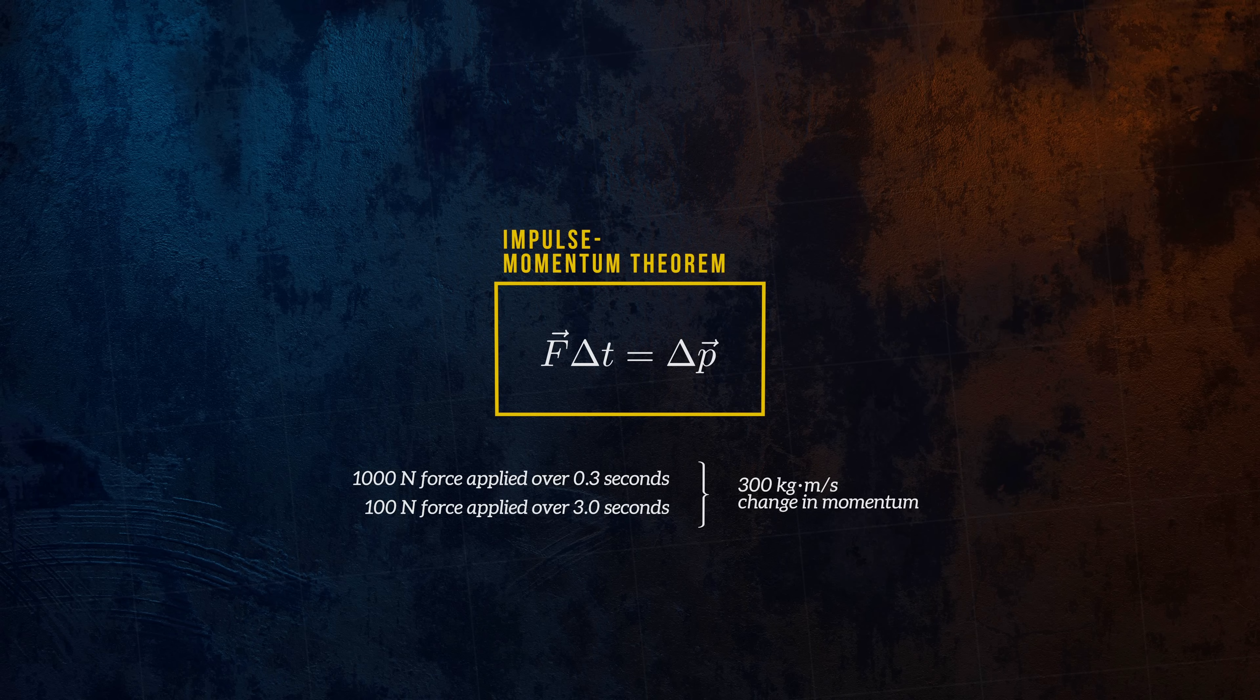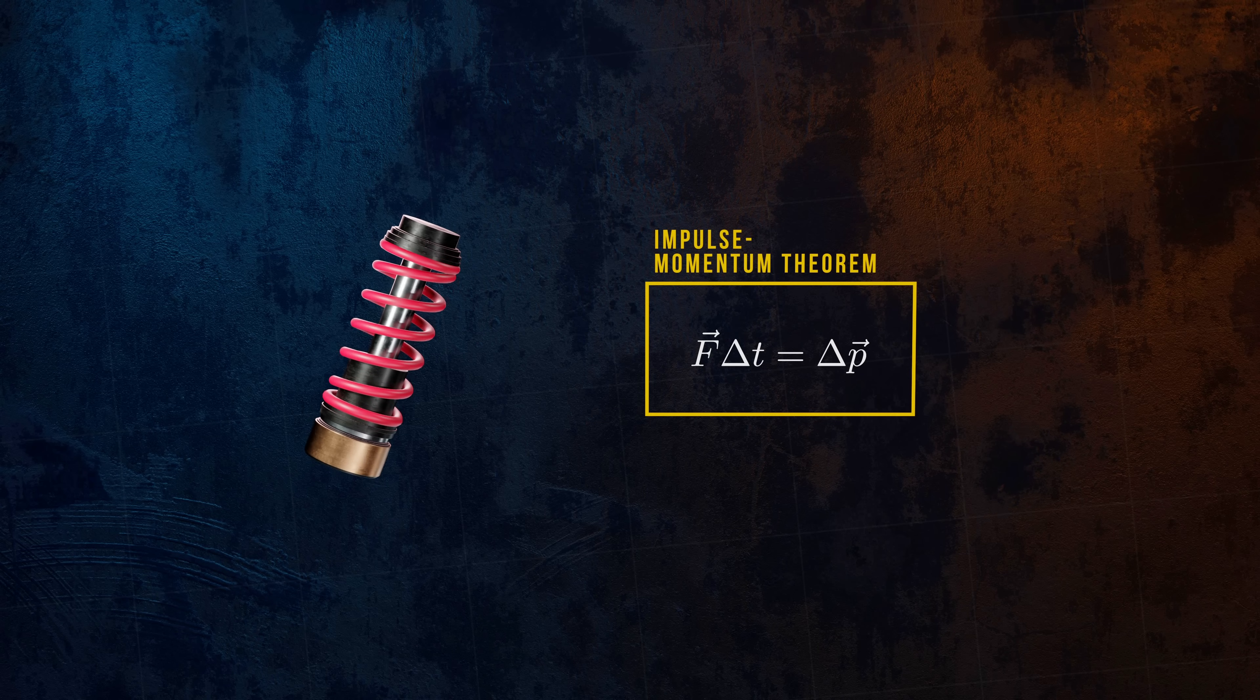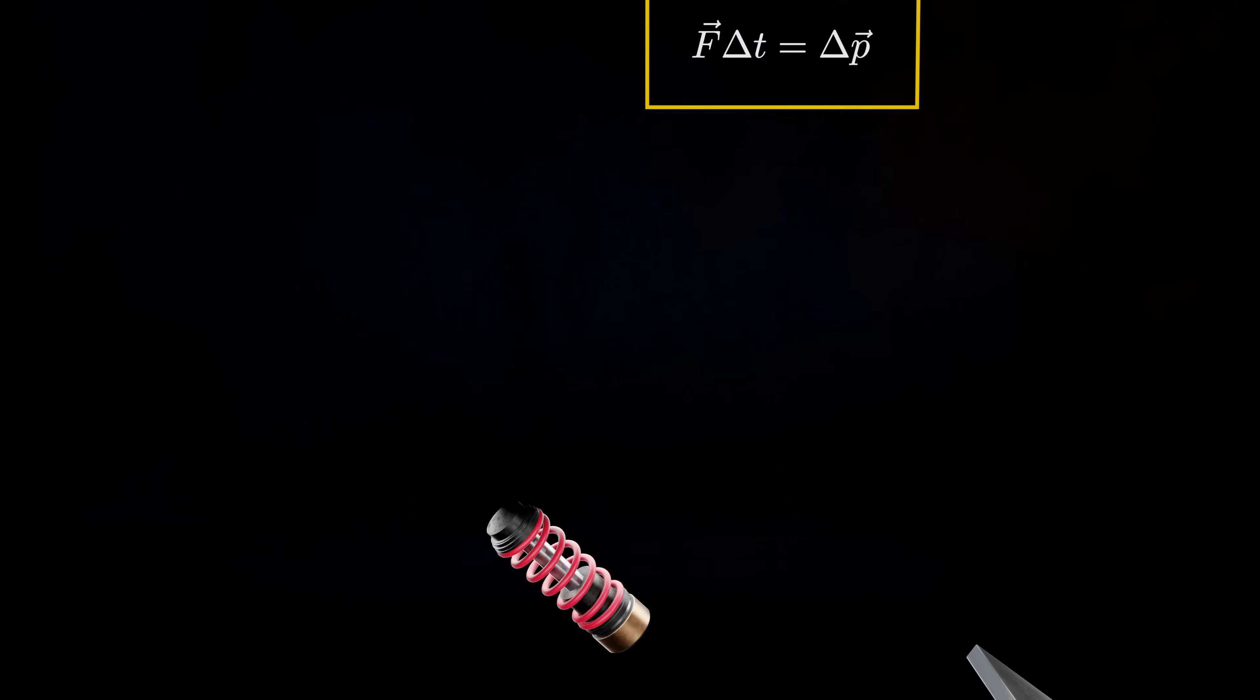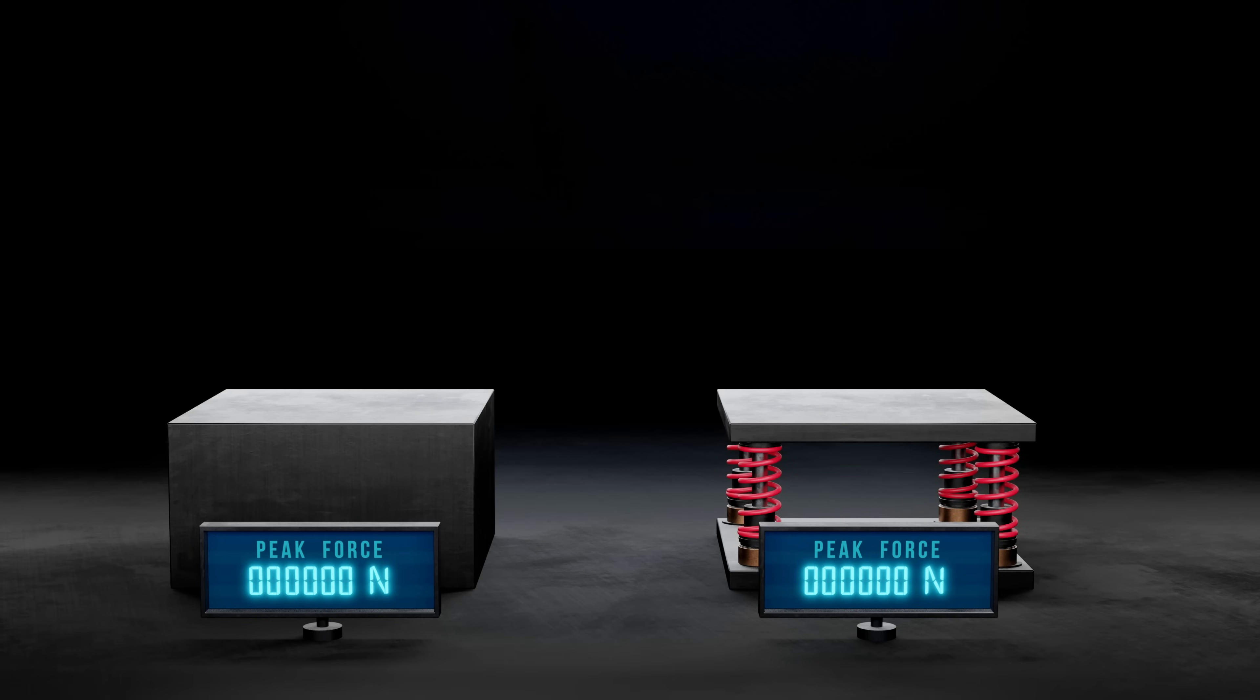This has practical implications in the design of many engineering systems, where for example extending the time over which a collision occurs can reduce impact forces, enhancing safety and reducing damage to the colliding objects. This is how a shock absorber works, like one you might find in airplane landing gear or in a car. It extends the time period over which an impact force acts, to reduce the peak force transmitted through it.